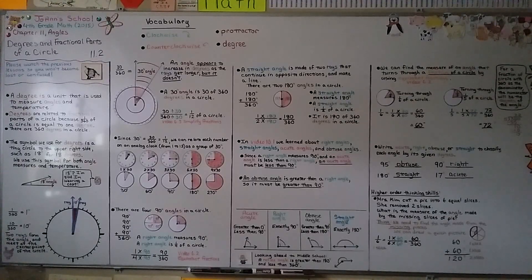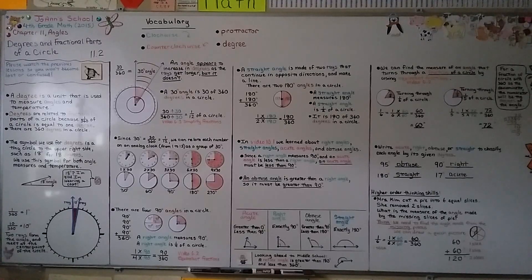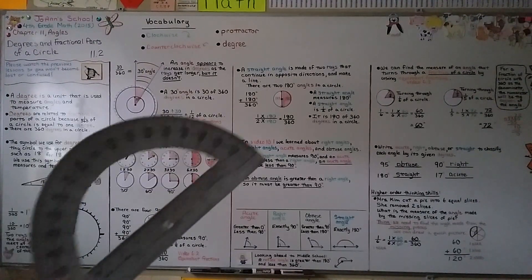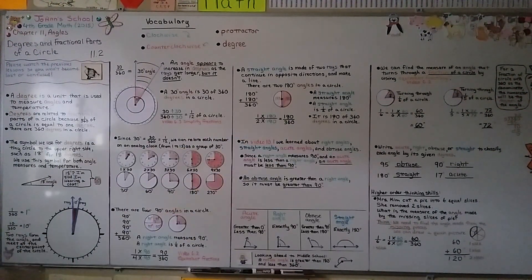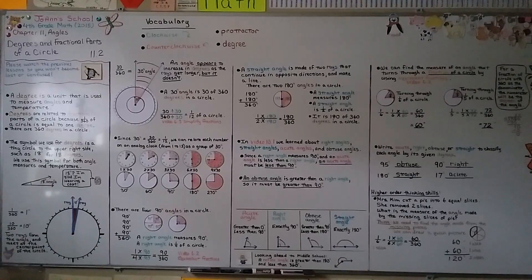When working with degrees of a circle, you can imagine a clock to help you. In our next lesson, 11.3, we're going to measure and draw angles with a protractor. This is what a protractor looks like. So make sure you have one for the next lesson. I hope to see you there. Bye!